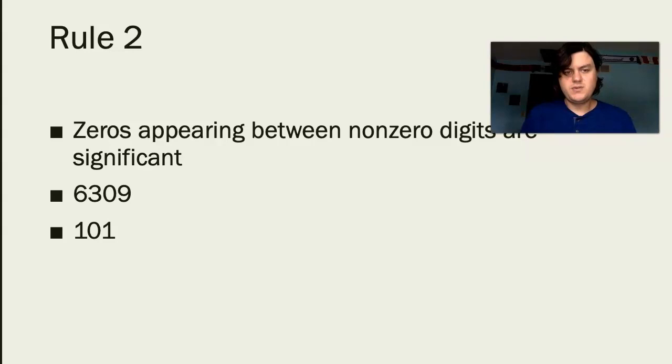The second rule is that zeros appearing between non-zero digits are significant. Here we have a couple of examples where in the number 6309, there are some non-zero digits, and then there's an additional non-zero digit at the end, which causes that middle zero to be significant. Many of the next rules we're going to talk about are actually going to be focused on zeros because that's where it can get a little bit tricky. But if the zero is in a sandwich between non-zero numbers, then it does make it significant.